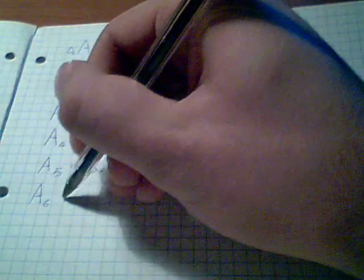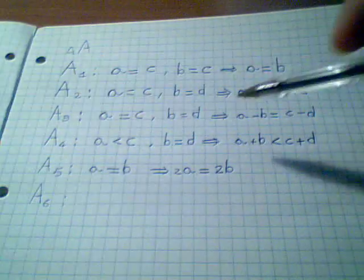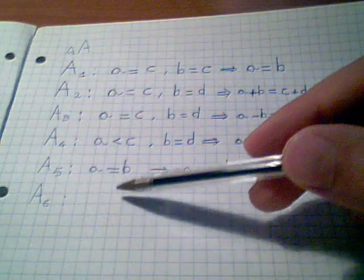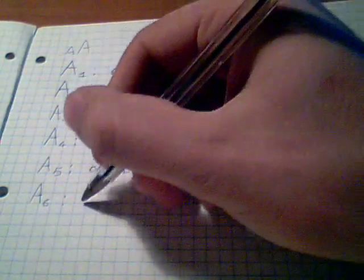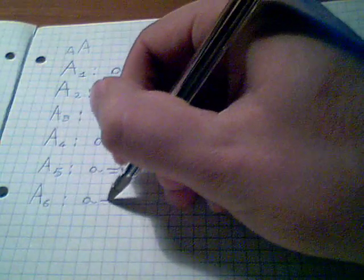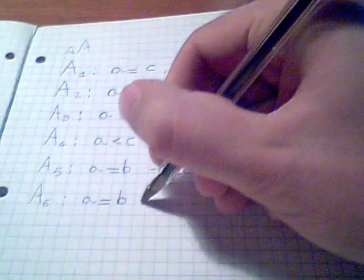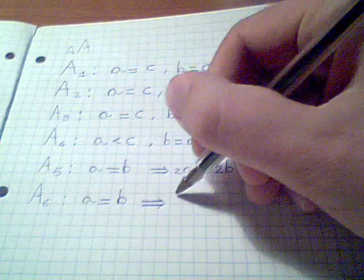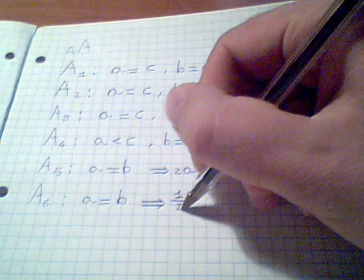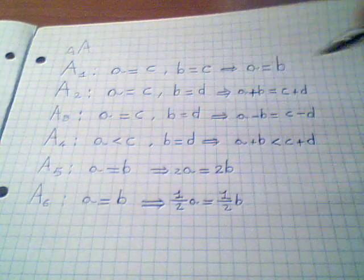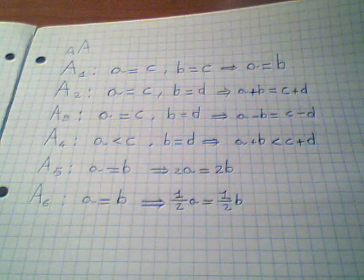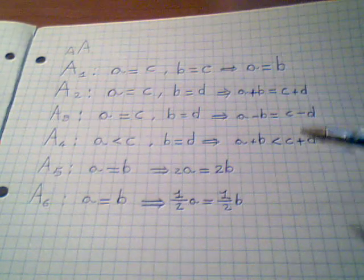The sixth one isn't an independent one as well, because it can be demonstrated from the third one. If A is equal to B, then one-half A will be equal to one-half B. Probably it's not from Euclid himself.